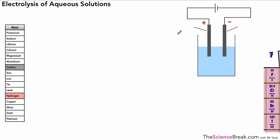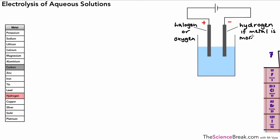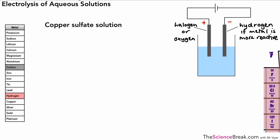That all sounds a little bit tricky, but if we practice a couple I think it will get easier. To summarize the rules: we get the halogen or oxygen gas at the positive electrode (the anode), and at the cathode (the negative electrode) we get hydrogen if the metal in the solution is more reactive than hydrogen. Unfortunately you'll have to memorize that — it won't be given to you.